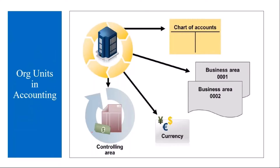The organizational units in accounting are: company code — we discussed already what is company code during our enterprise structure classes in the beginning. This company code is assigned to chart of accounts.